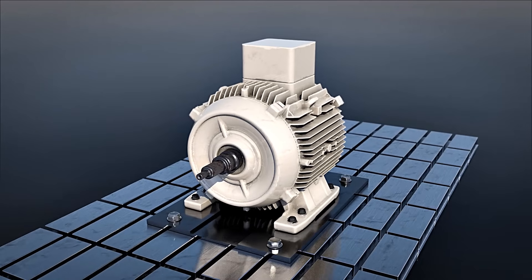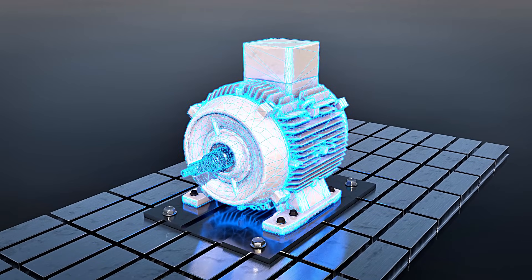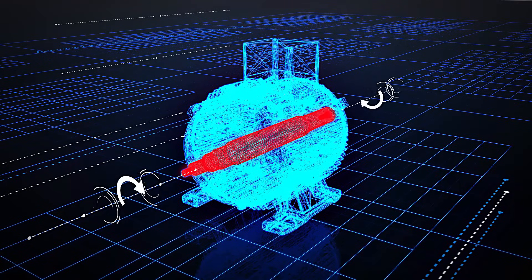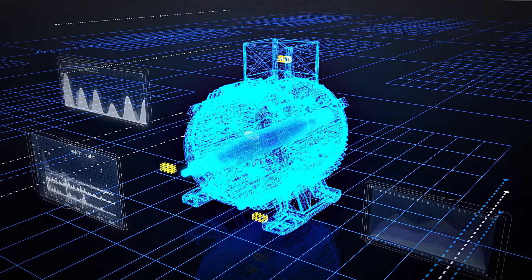For example, the digital twin of an electric motor not only showcases form, but also analyzes functions. From the rotation of the shaft, to thermal conductivity, to data from sensors and beyond.